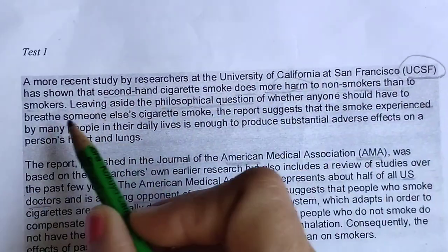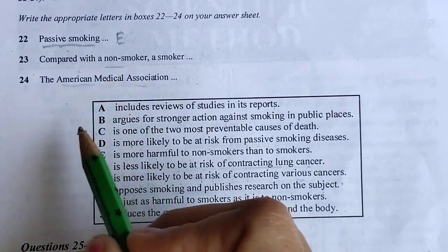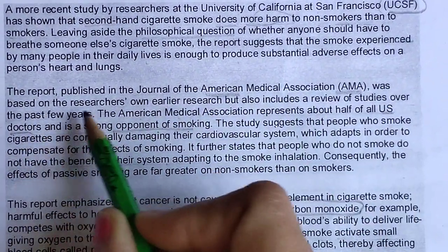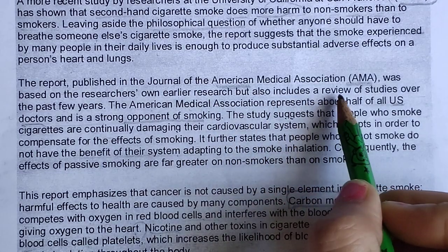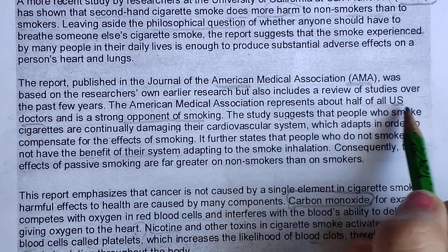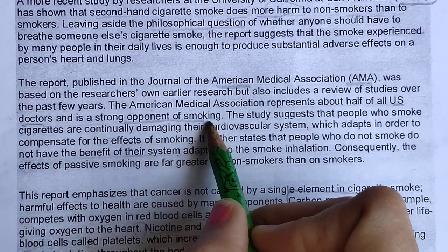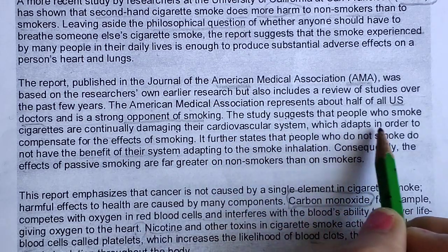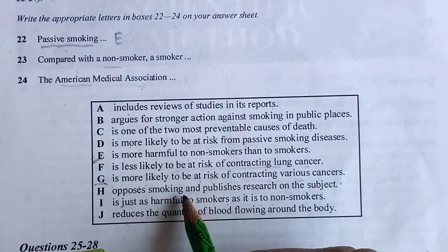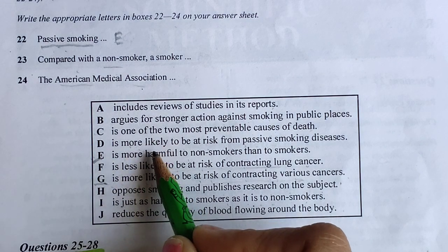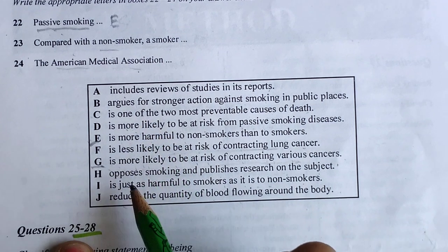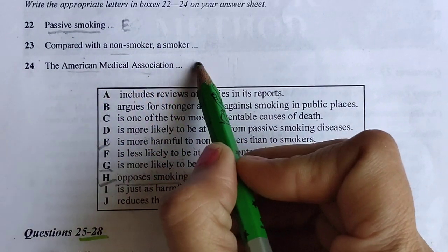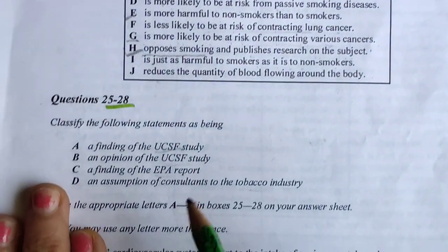For question 24 about the American Medical Association: the AMA report 'was based on earlier research but also includes a review of studies over the past years.' The AMA represents about half of US doctors and is a strong opponent of smoking. They oppose smoking and publish research on the subject — so option C will come for the AMA. For question 24, we write C: 'opposes smoking and publishes research on the subject.'